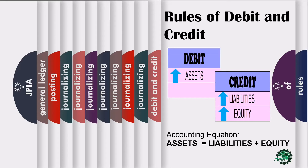This is the accounting equation: assets equal liabilities plus owner's equity. You can observe that assets are on the left side and liabilities and equity are on the right side. The accounting equation is the most basic tool of accounting. Remember that assets must always equal liabilities and owner's equity.